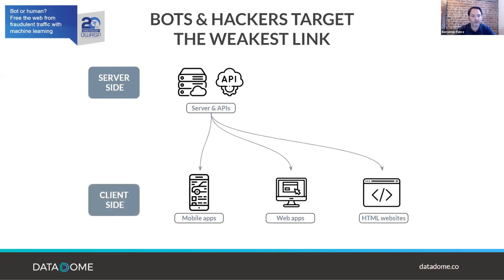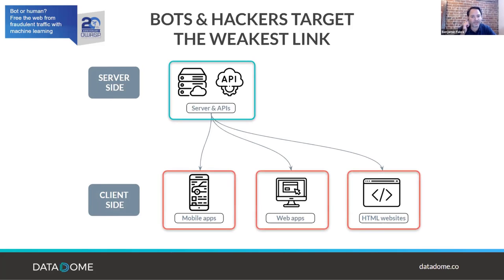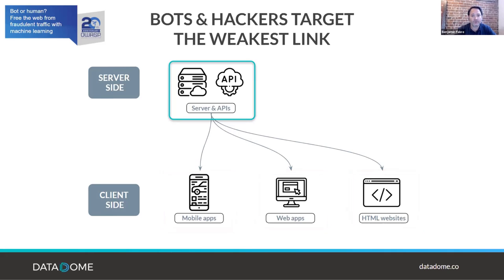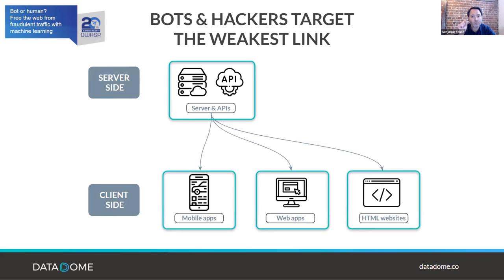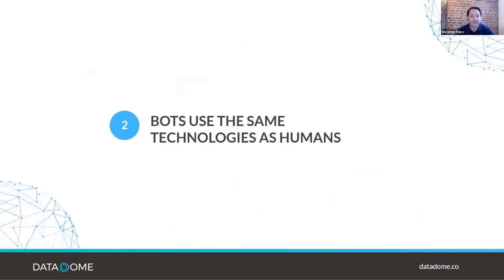The bad guys are trying to reach the servers and APIs — that must be protected — but we've also seen them targeting the mobile application, the web application, and the HTML website. In general, hackers will try to find the weakest spot on any website or application where they can get access to data.